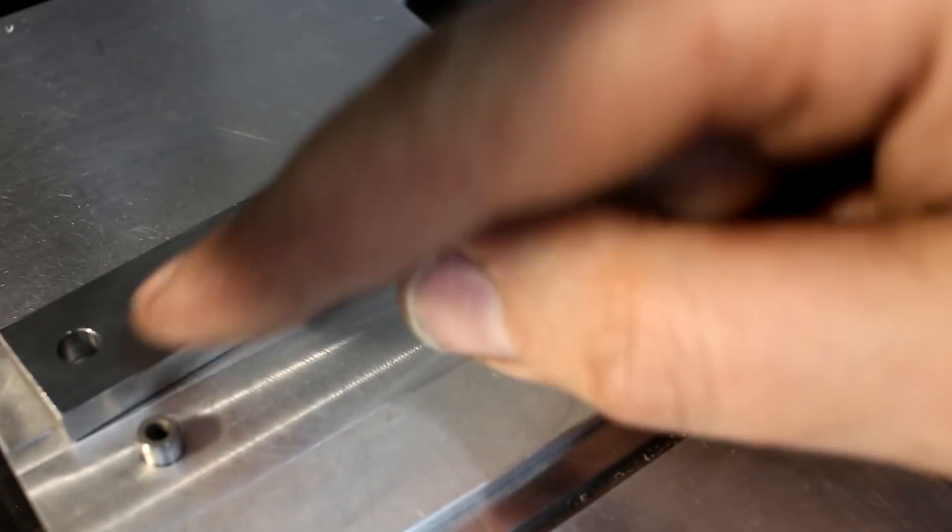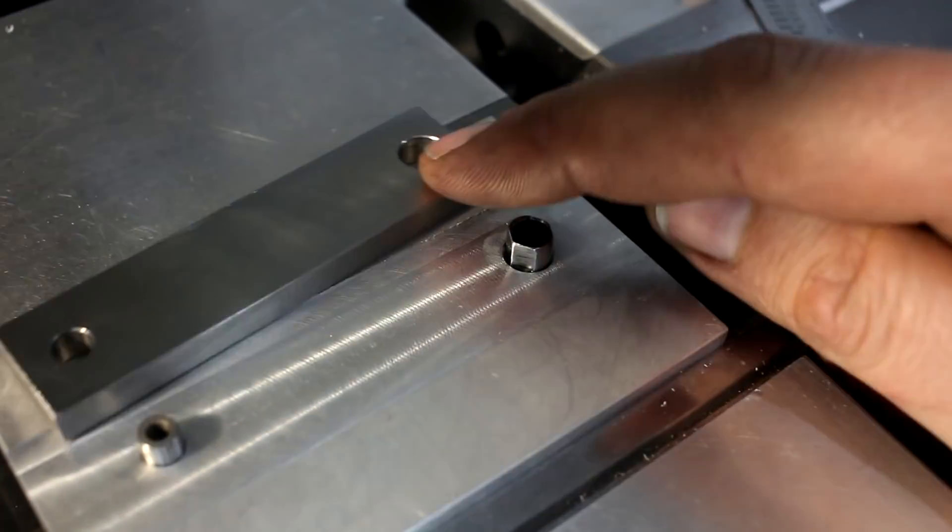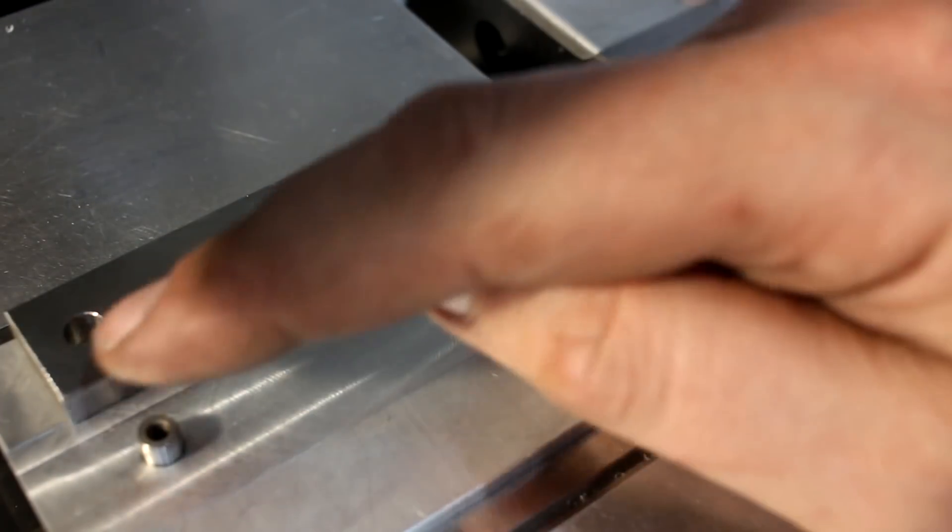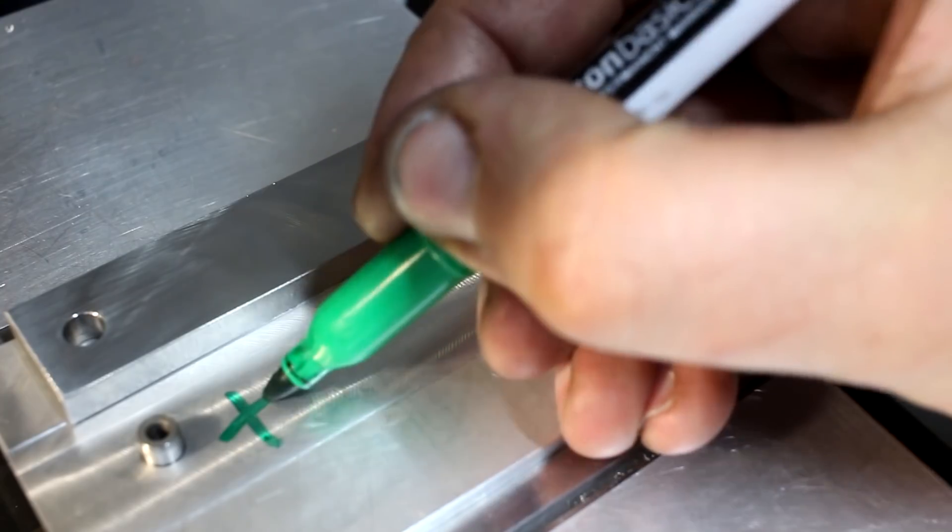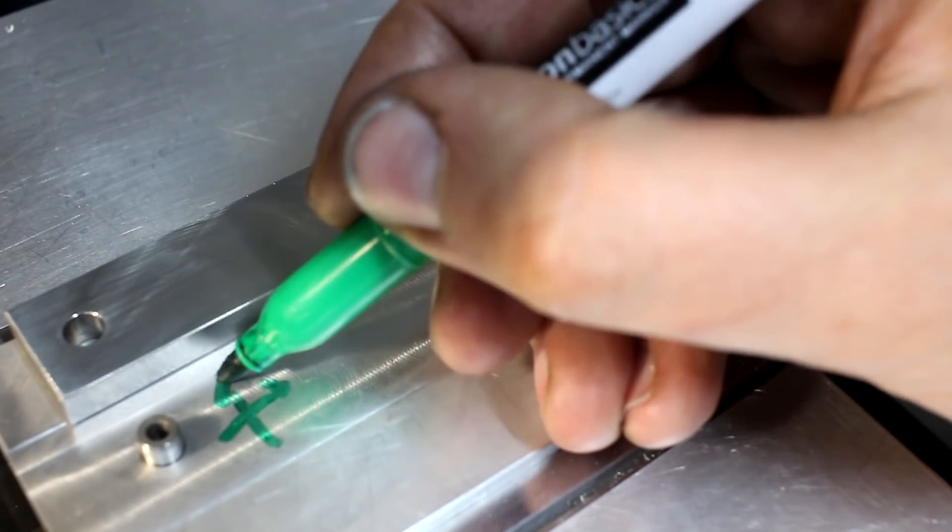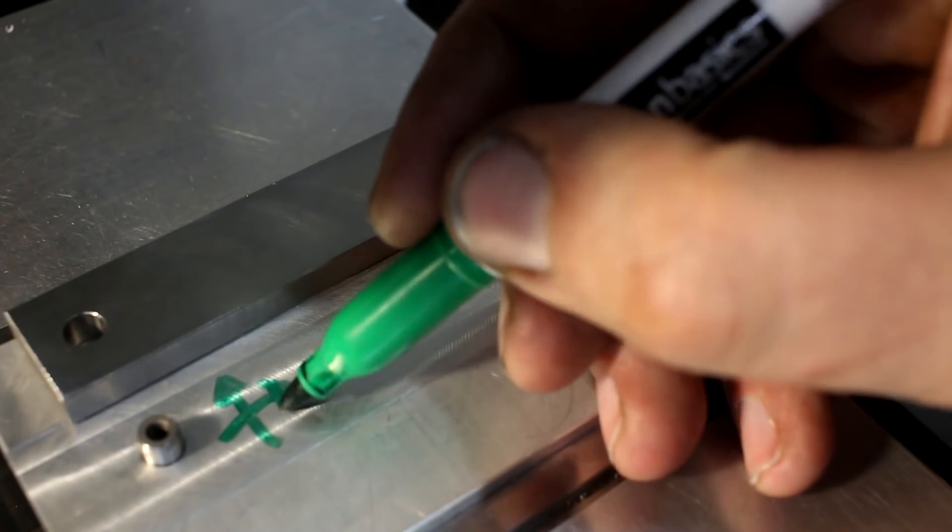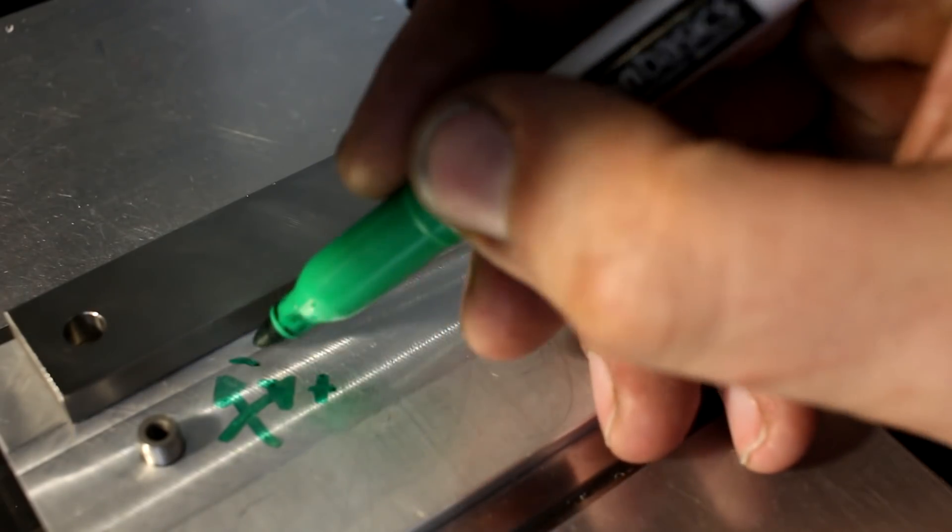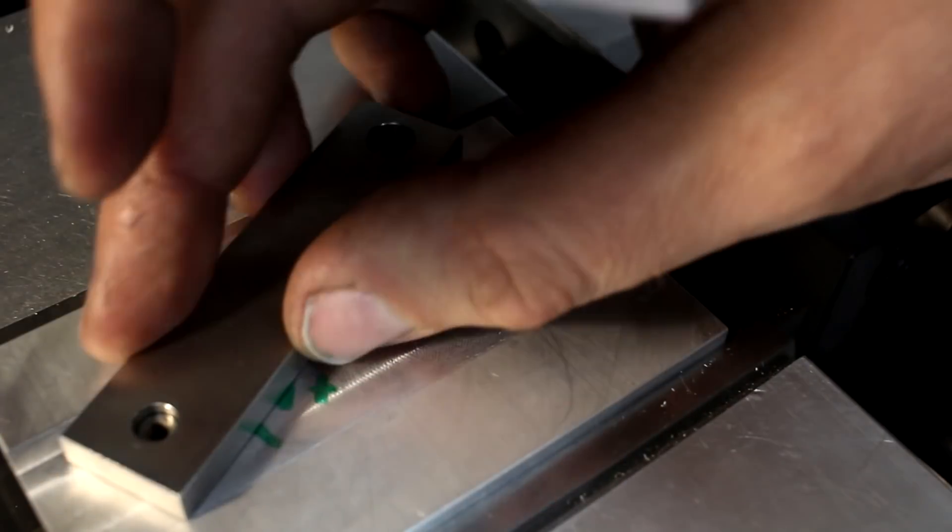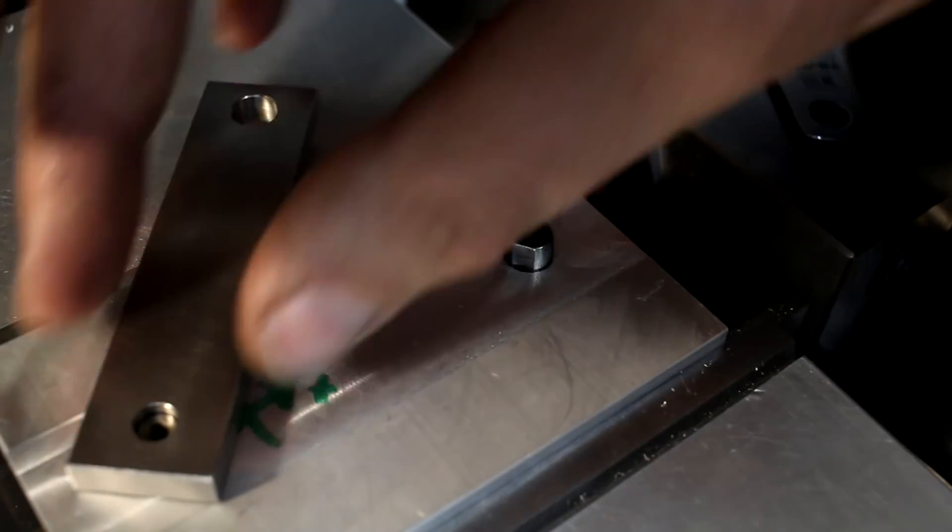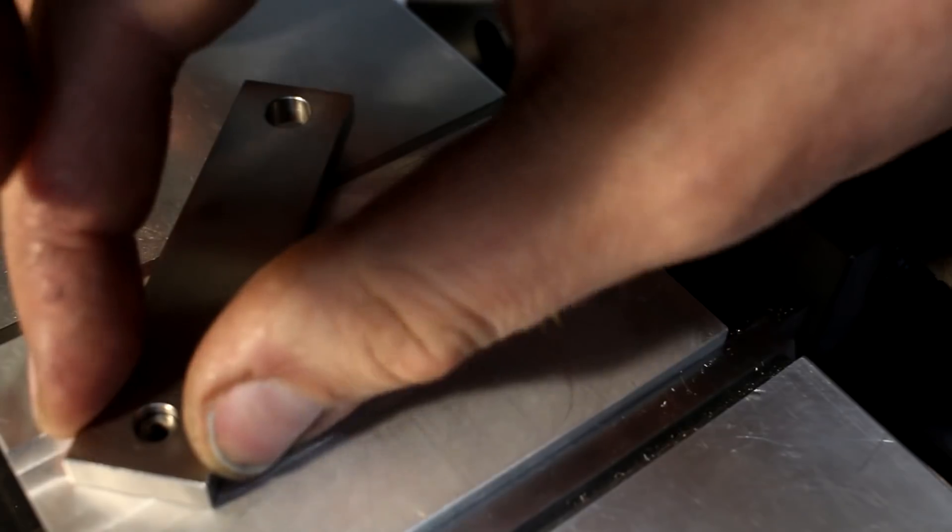We have a part with two features, two round features to locate it. The first one locates X and Y. If you put the part on here, it's located in X and Y. It can't move side to side or up and down. But it still can rotate.